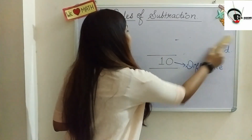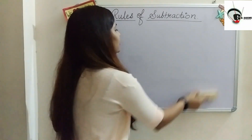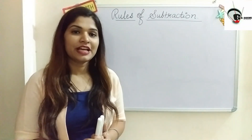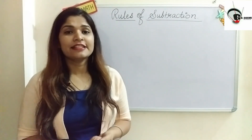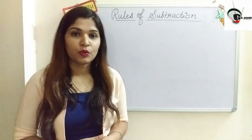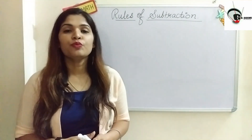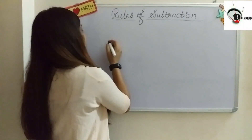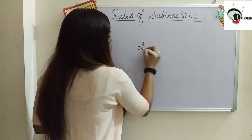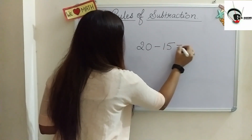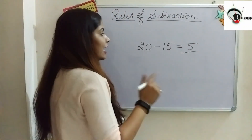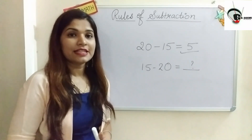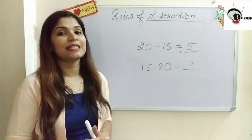Now let us move to the rules of subtraction. The first rule is about the order of numbers. In addition, changing the order of addends doesn't affect the result, but in subtraction, the order does matter. You must keep the numbers in the same order — for example, 20 minus 15 gives us 5, but we cannot write 15 minus 20, as that gives a wrong answer.